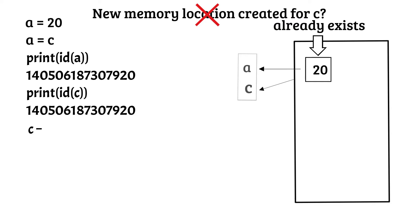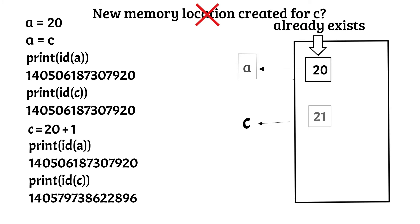Now let us try out a few more things. What if we add 1 to the variable C? Now the value of C will become 21. This would mean that another integer object 21 will be created in the memory, and this newly created integer object will point to the variable name C. Also remember that the reference between the value 20 and C will be broken. So now, if we try to fetch the memory addresses of the variables A and C with the ID function, then as you can see, the memory addresses are different now, because both the variables are now pointing to different values stored at different memory locations.